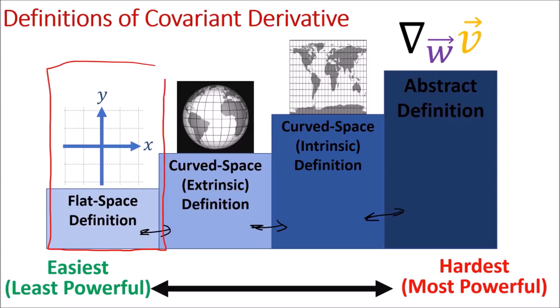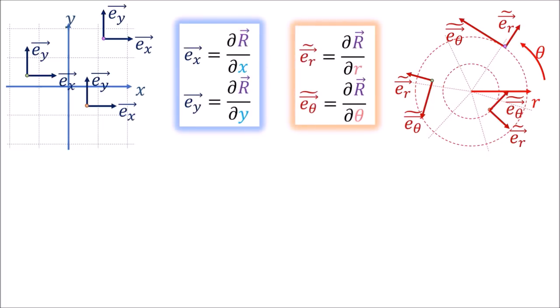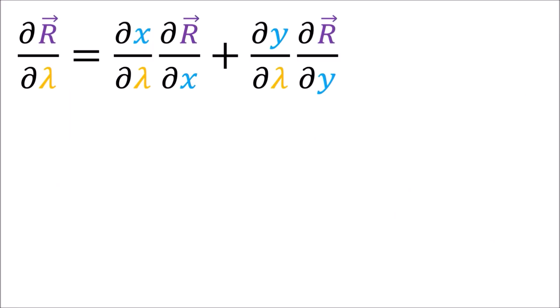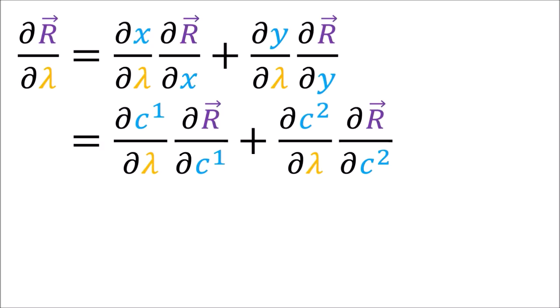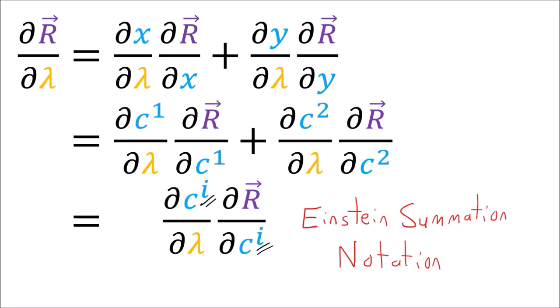In this video we're going to look at the easiest definition, which is the flat space definition. I want to remind you about our Cartesian and polar coordinate systems, where the basis vectors in each system are equivalent to the partial derivatives of a position vector capital R with respect to the coordinate variables. For Cartesian variables I'll sometimes write c1 and c2 instead of x and y, and for polar variables p1 and p2 instead of r and theta. When an index appears on top and on the bottom, I'll sometimes leave the summation sign out — this notation is called Einstein notation.